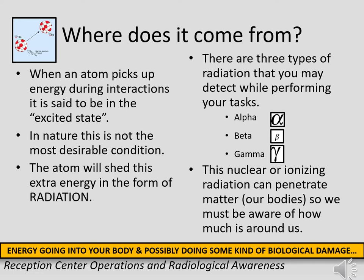There are three types of radiation you may encounter while performing your tasks: alpha, beta, and gamma. This nuclear or ionizing radiation can penetrate our bodies, so we must be aware of how much is around us.